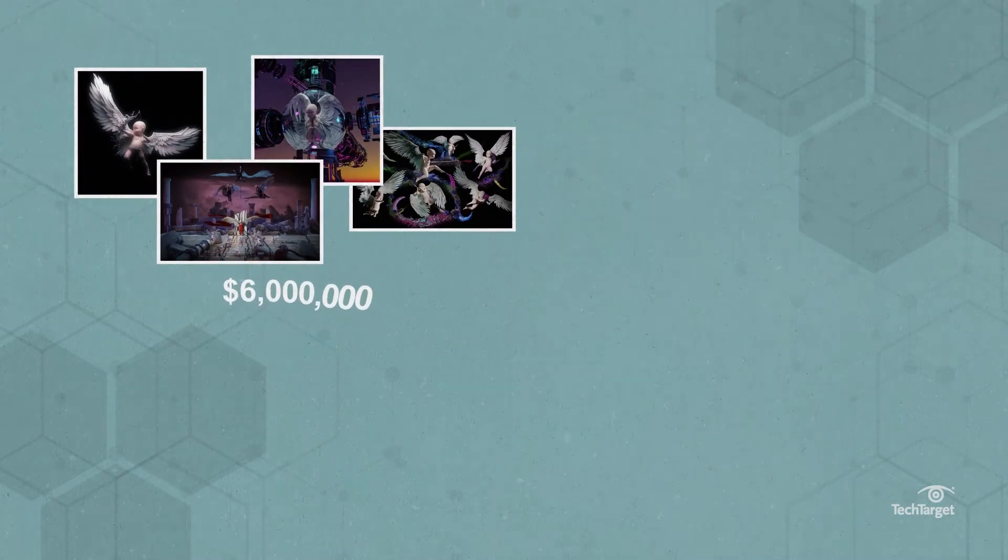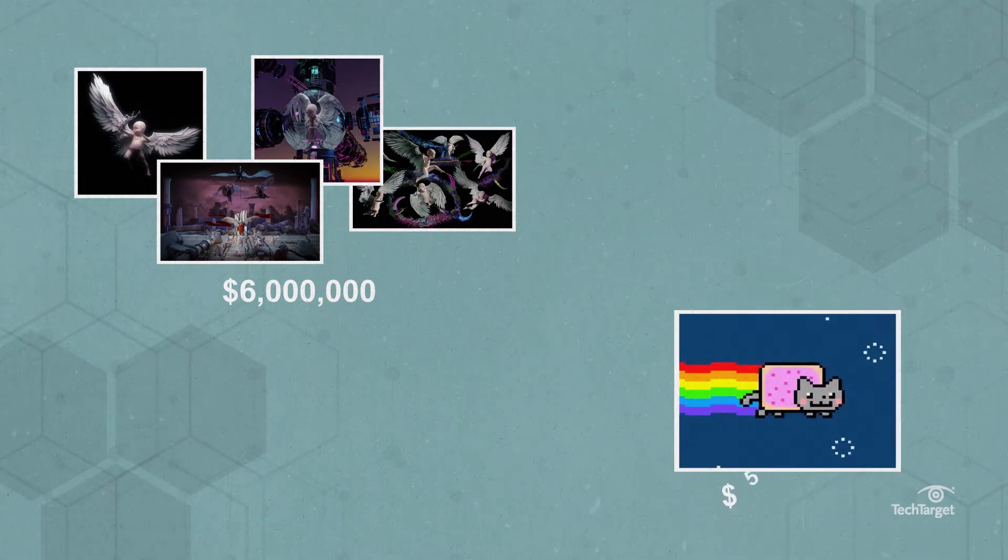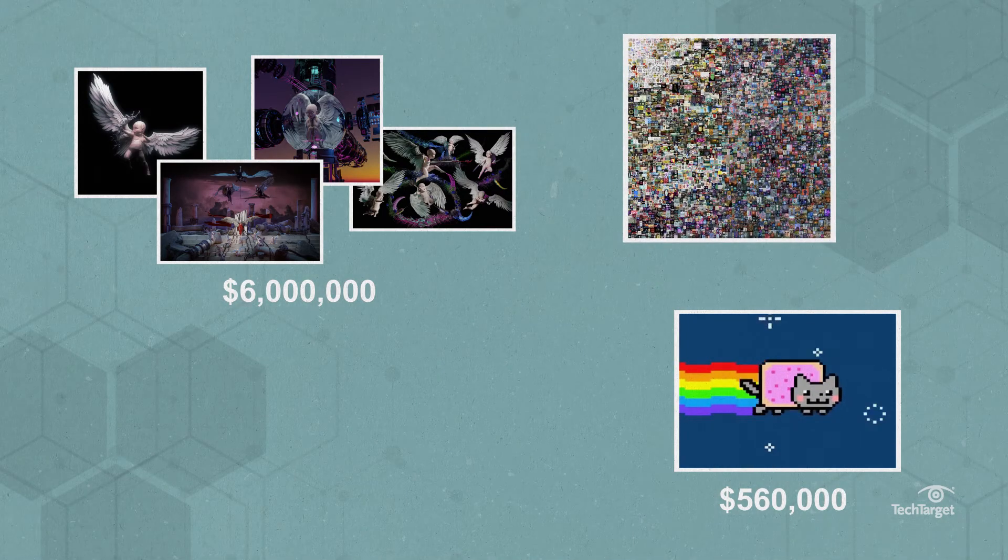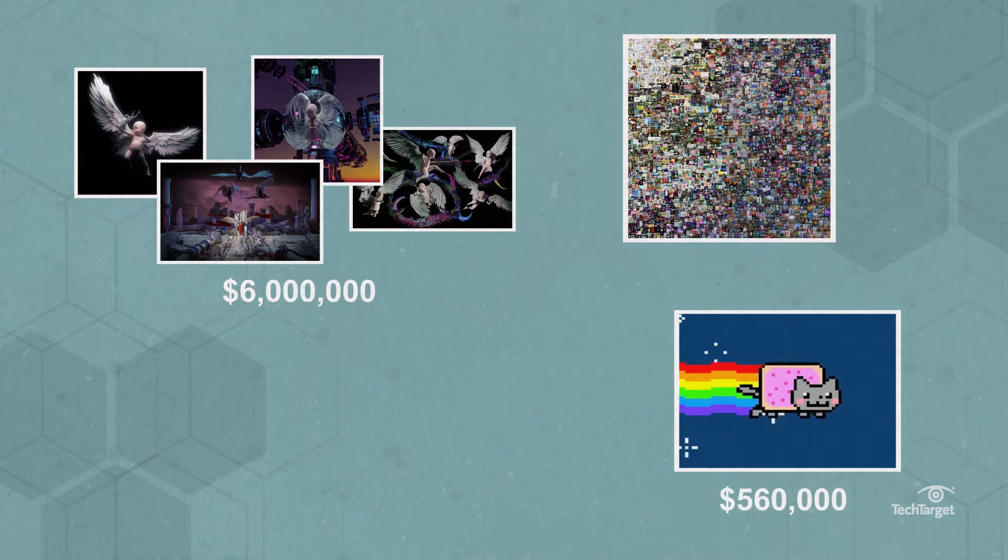In February, the musician Grimes sold $6 million worth of tokens of digital art, and the Nyan Cat meme animation sold for over $560,000. In March, digital artist Beeple's Everydays: The First 5000 Days was the first piece to be auctioned at Christie's auction house, selling for almost $70 million.